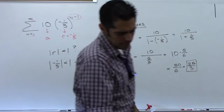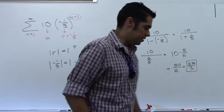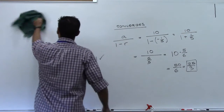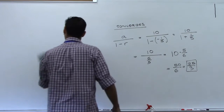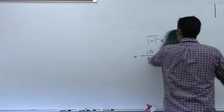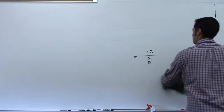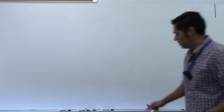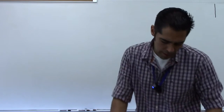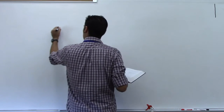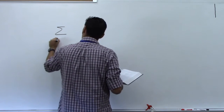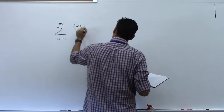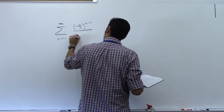I'll let you try number 8 on your own, because it's very similar to that. Let's look at number 9. In that last problem there was a lot going on — we had to find the pattern, establish it, and rewrite it. Number 9 is more straightforward because they actually give you the summation: n equals 1 to infinity of (-3)^(n-1) over 4^n. They've already done a lot of the groundwork.